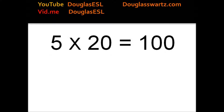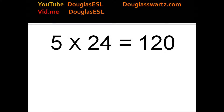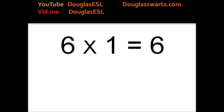5 times 20 equals 100. 5 times 21 equals 105. 5 times 22 equals 110. 5 times 23 equals 115. 5 times 24 equals 120. 5 times 25 equals 125. 6 times 1 equals 6.